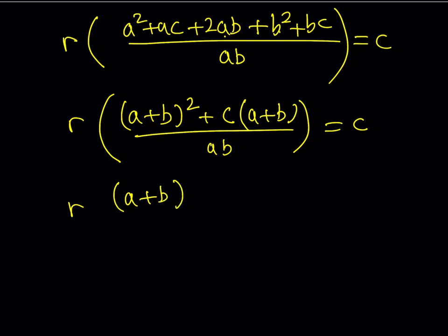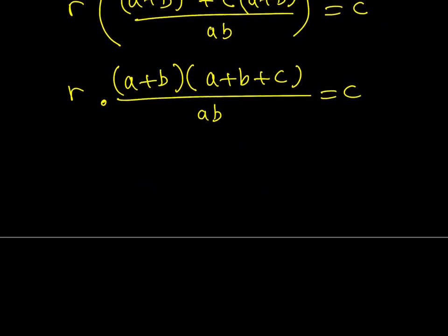Now, I think it's time to cross multiply. Let's go ahead and do it and isolate r. So, r is going to be equal to, from here, abc divided by a plus b multiplied by the quantity a plus b plus c.